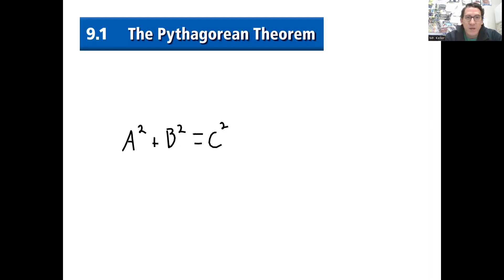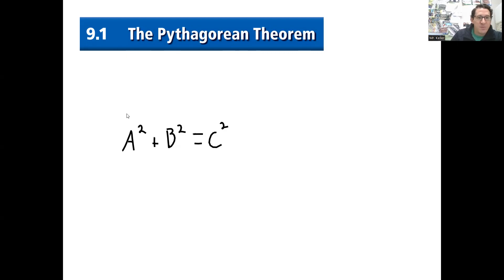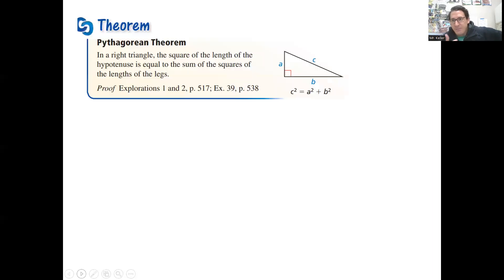We actually had a U.S. president publish a proof of the Pythagorean Theorem. You probably wouldn't be able to guess, so I'll just tell you — President Garfield published a proof of the Pythagorean Theorem. And the history of Pythagoras, who it's named after, is kind of wild. We'll talk about it in class a little bit, but if you're interested, you should look it up.